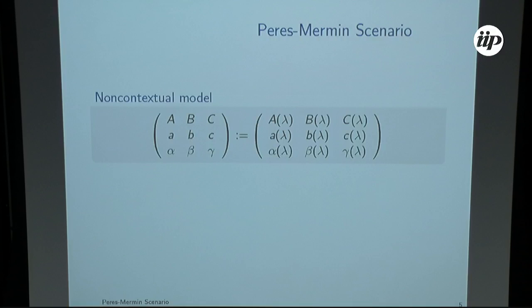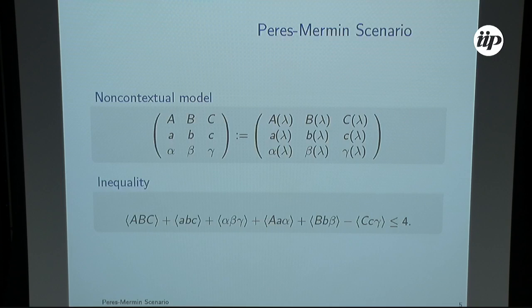In terms of non-contextual model, you assume that each observable has a dependence on some hidden variable and is defined by it. The inequality associated to this table is the sum of the expectation value for the contexts minus the last column is not greater than four.